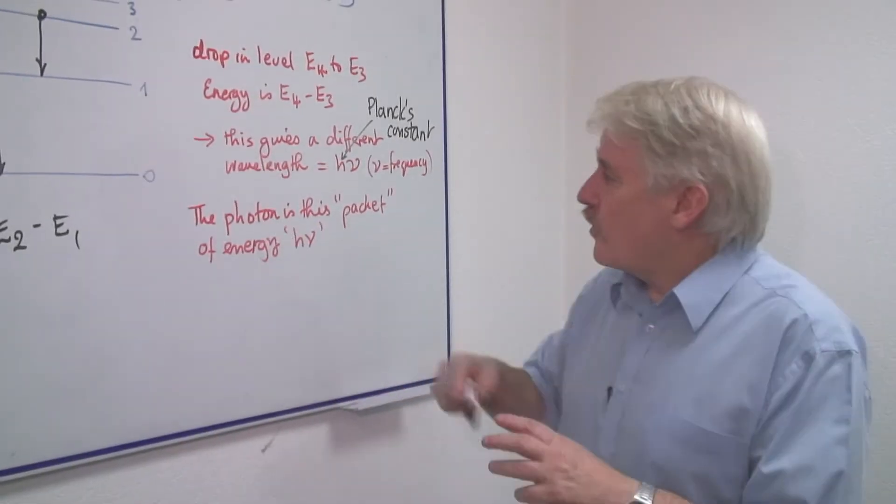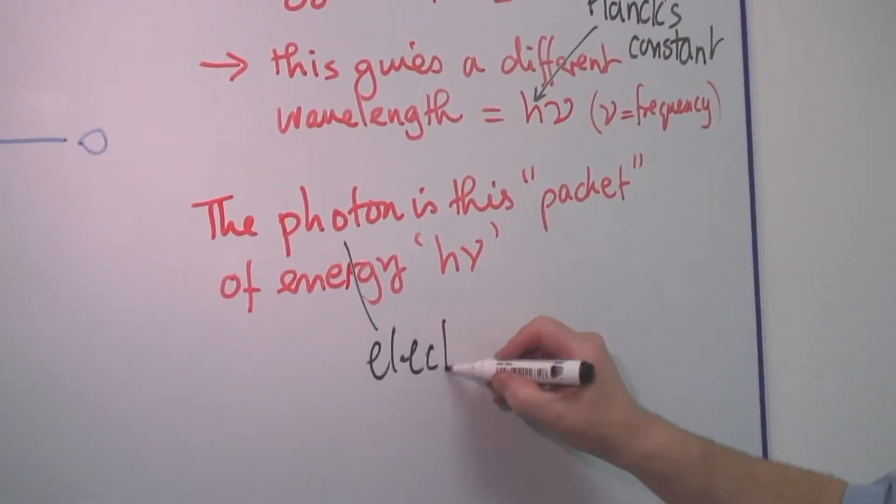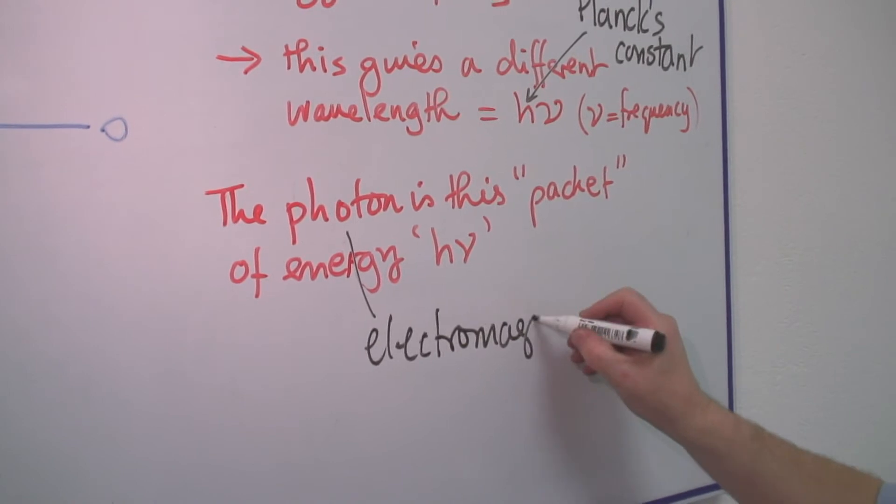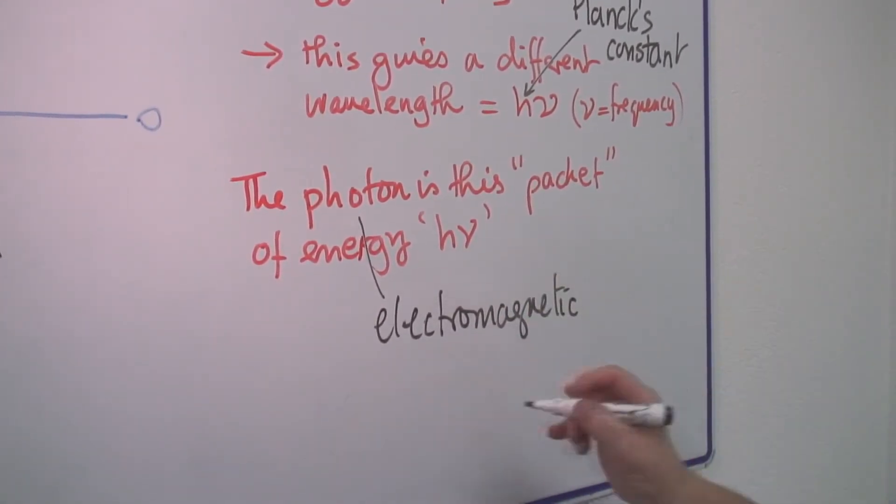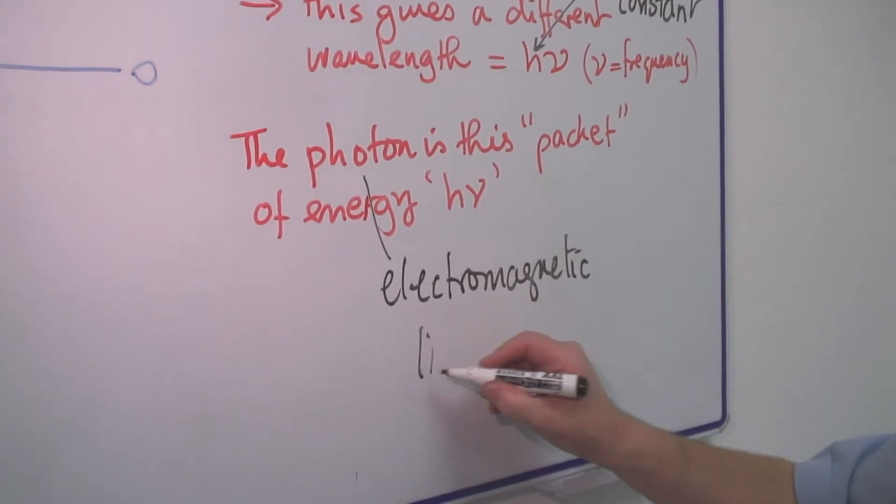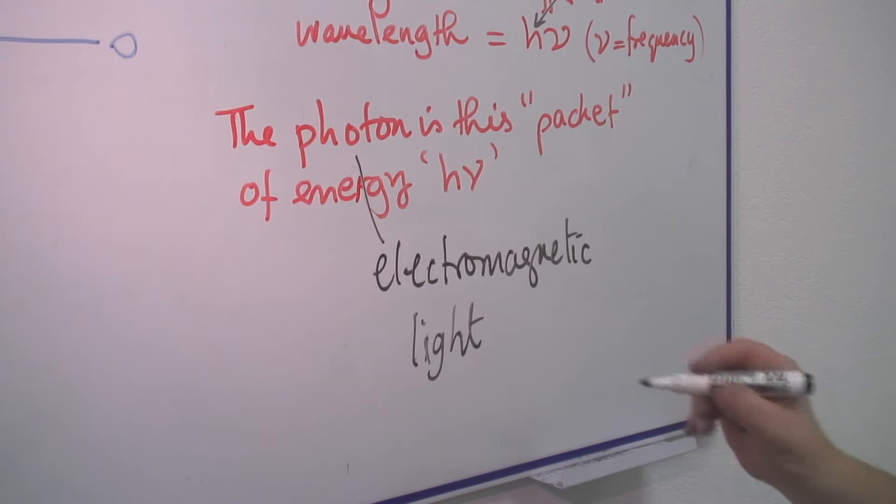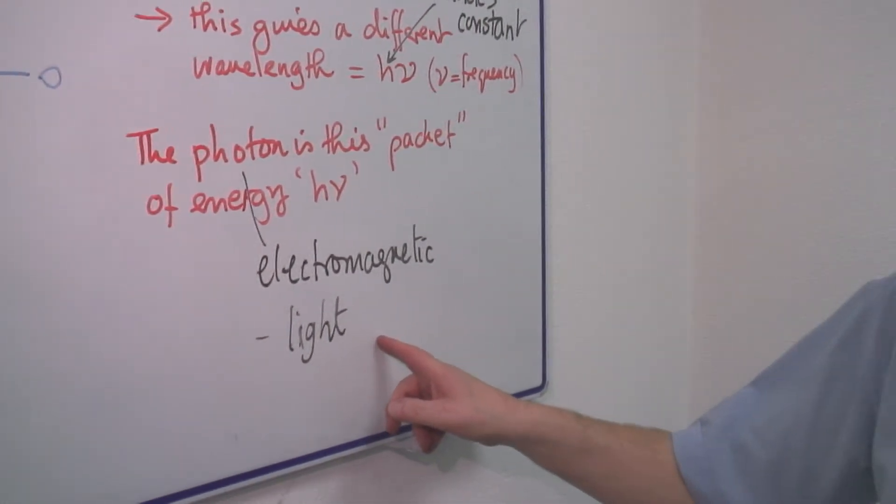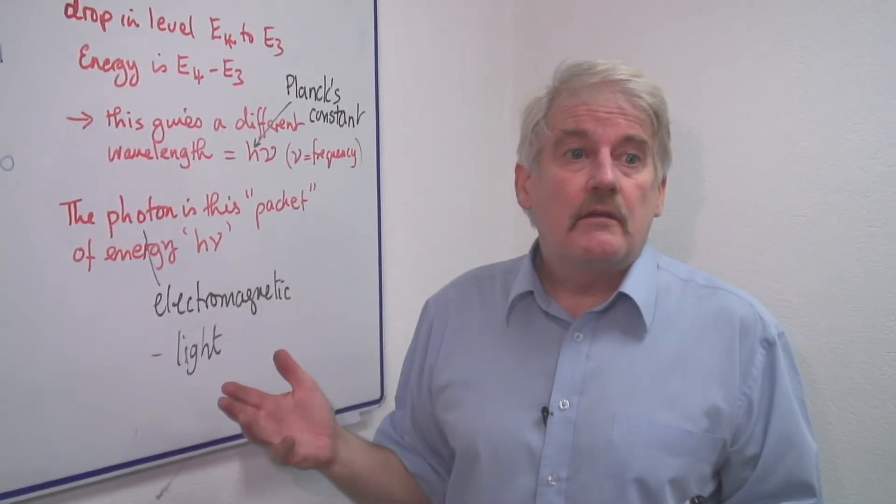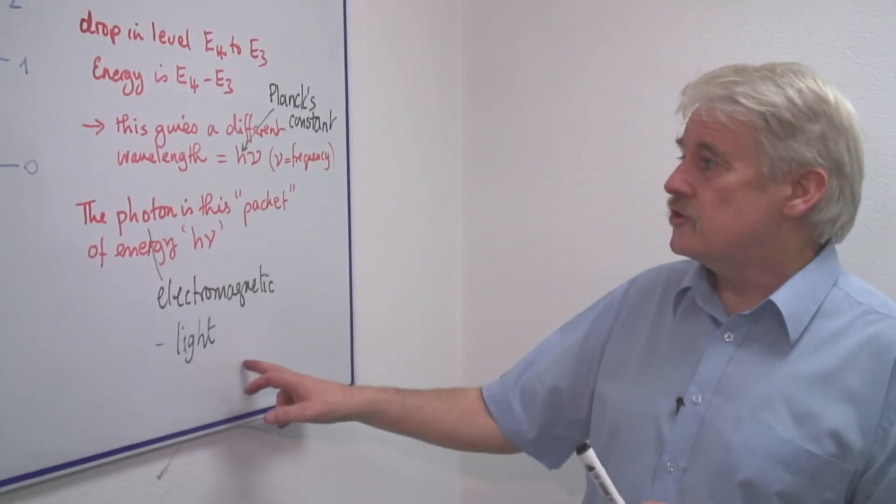This photon is in fact electromagnetic radiation, and in fact is or can be light, visible light. So the electron can actually glow and give out visible light. It might be x-rays, it might be infrared, it might be ultraviolet. It can be any of the electromagnetic radiations.